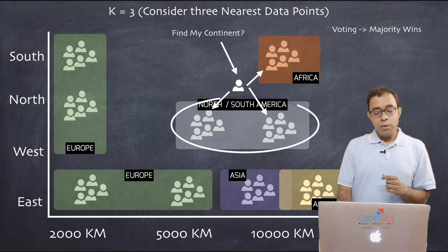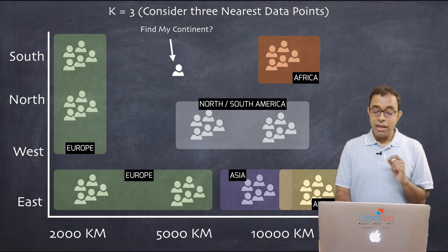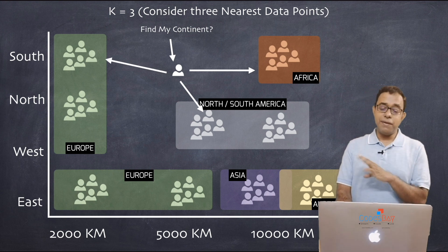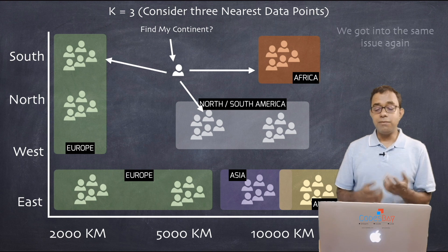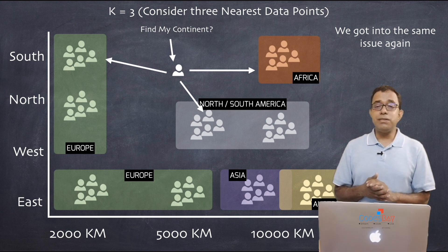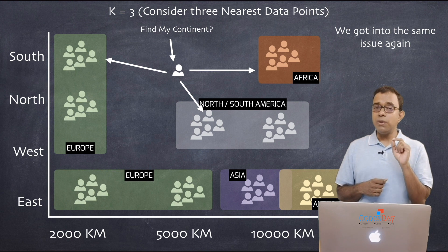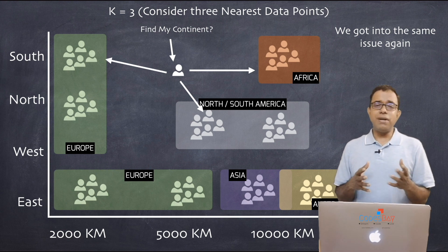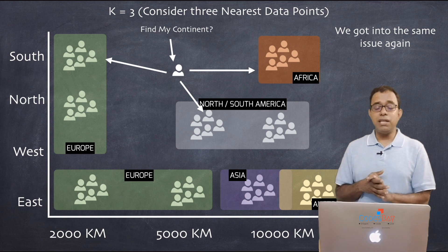Let's see one more example. If a person is equidistant from three neighbors, all three in different continents — one in Africa, one in North/South America, one in Europe — we are back to square one even with an odd K value. This means your K value is not optimized. You have to optimize your K value based on your dataset. People generally randomly select 1, 5, 10, 15, or 20, but if any data points fall into these tie situations, your K value is not correct.